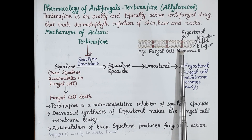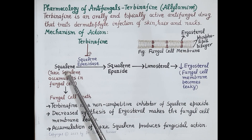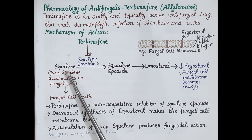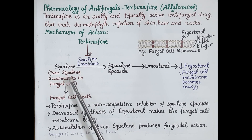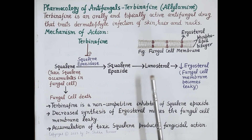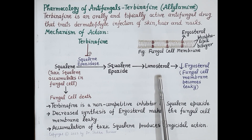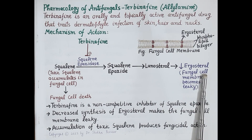Fungal cells synthesize ergosterol from squalene, so squalene is the precursor of ergosterol. In the fungal cell, the enzyme squalene epoxidase converts squalene to squalene epoxide, which is further converted into lanosterol, and lanosterol produces ergosterol. This ergosterol is a very important component of the fungal cell membrane.